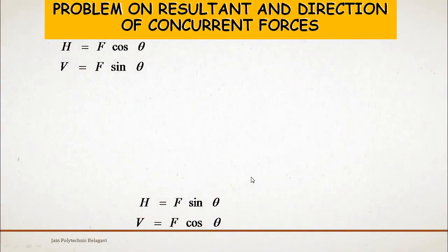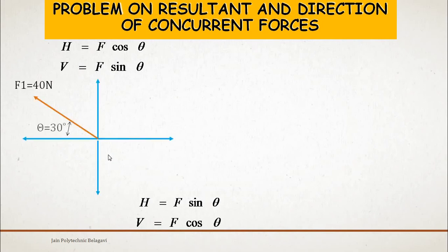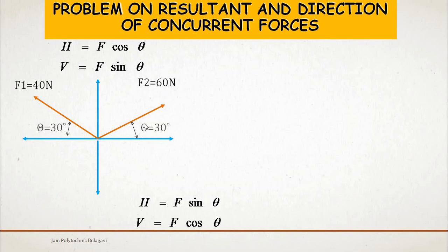Here is the question: Force F1 is acting at 30 degrees having a force of 40 N. Force F2 is 60 N, acting at 30 degrees. These two forces are acting with respect to the x-axis.